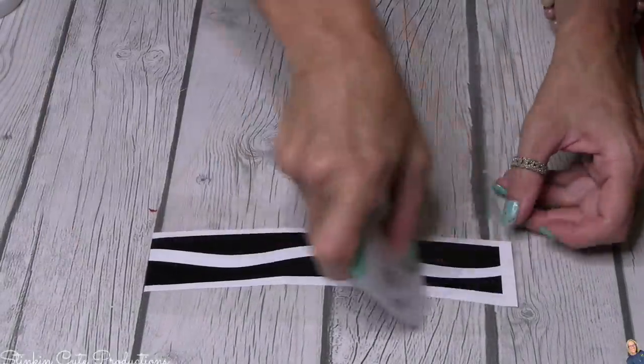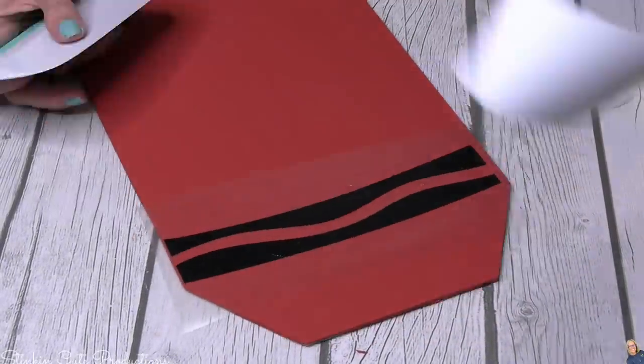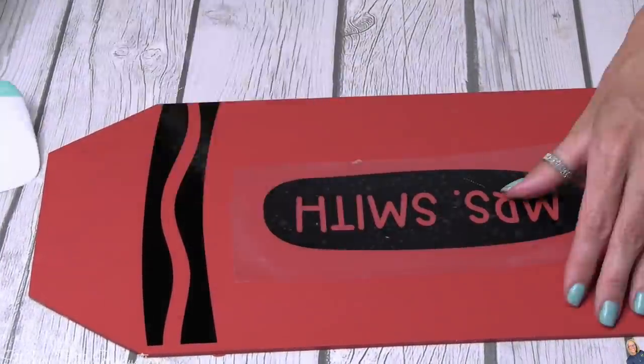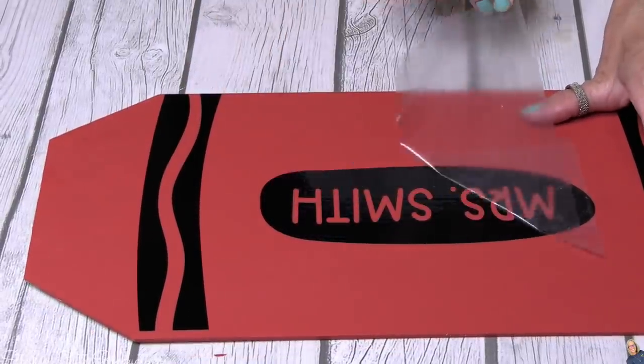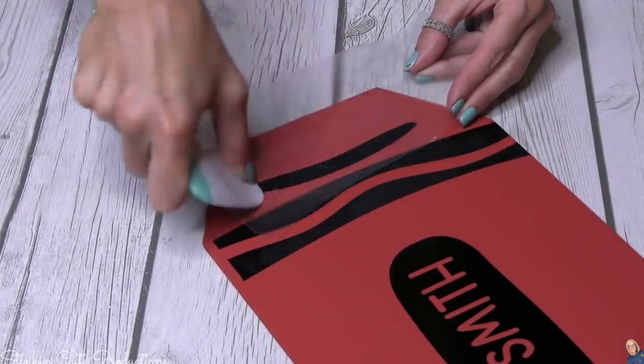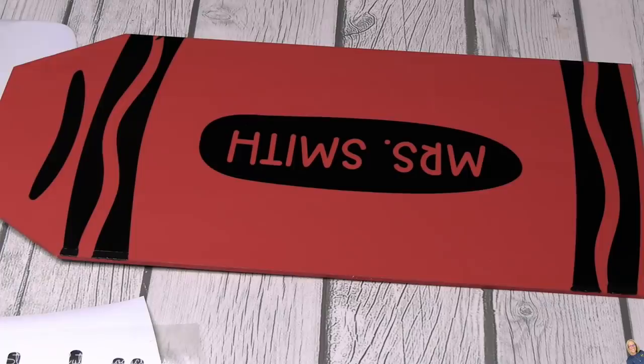Since there are two sides to this crayon we're gonna repeat the process with all of the pieces of our vinyl that we cut using the Cricut Explorer Air 2. And look there we have just made a crayon out of a plaque and some vinyl using Cricut Design Space. Isn't this cool? I love this but wait we're not done, let me show you what I do with the pencil.